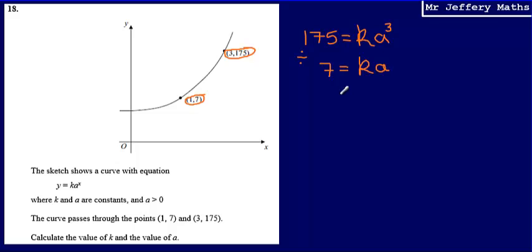So what I can say is that 175 divided by 7 will be equal to k divided by k, so they will cancel each other out, and then a cubed divided by a to the power of 1, which will give me a squared.